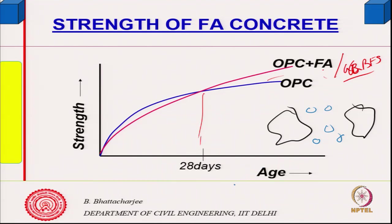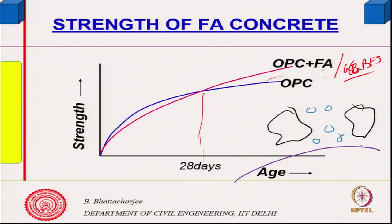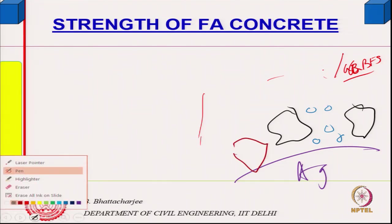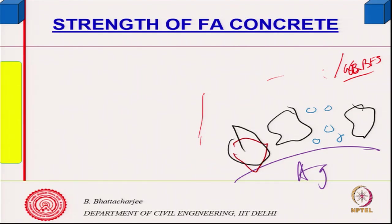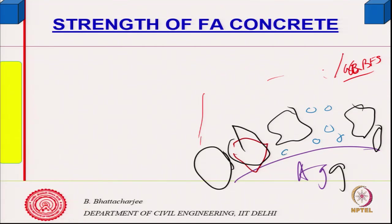This also happens at the aggregate interface or boundaries. Near the aggregate, packing of cement particles is not optimal — this is generally the weakest link. We call it the interfacial transition zone (ITZ), where packing near the aggregate is not very good. But when you put silica fume — a fine material finer than cement — it will go into those spaces at the aggregate boundary.